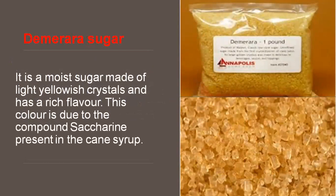Next is demerara sugar. It is a moist sugar made up of light yellowish crystals and has a rich flavor. This color is due to the compound saccharine present in the cane sugar syrup. Sugar syrups have moisture-retaining agents in baked products and include molasses, small syrup, invert sugar, honey, golden syrup, and liquid glucose.